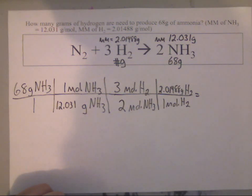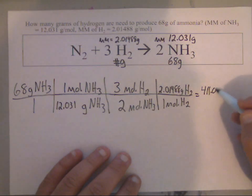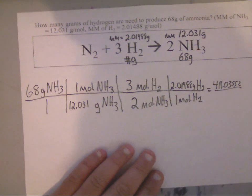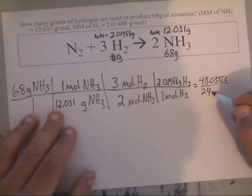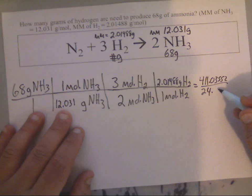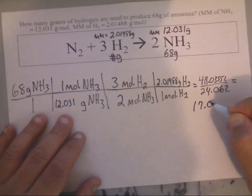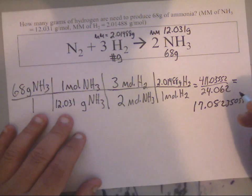So we've got 68 times 3 times 2.01488, and I end up with, this is just the top number, 411.03552 divided by, and on the bottom I'm going to divide by 12.031 and I'm going to divide by 2, and I end up getting... I didn't punch in that last one, I'm sorry, that was 24.062 on the calculator, which finally gives me 17.082350594.